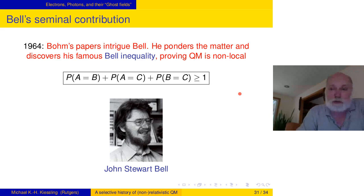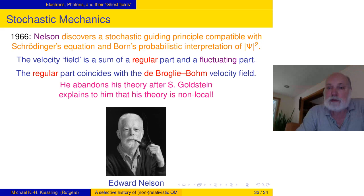He discovers this famous Bell inequality. There are three different possible matches. If you have the probability that A matches B, plus the probability that A matches C, and the probability that B matches C cannot be smaller than one. But in quantum mechanics, in such a calculation, you get three-quarter. Three-quarter is clearly less than one. That means, since this is coming from assumption of locality, it means QM is not local, it's not a local theory. Einstein was gone at the time. I wonder how he would have reacted to such a discovery.